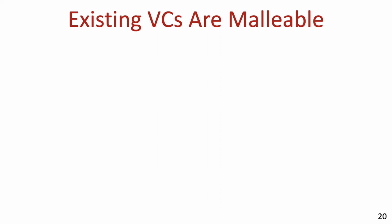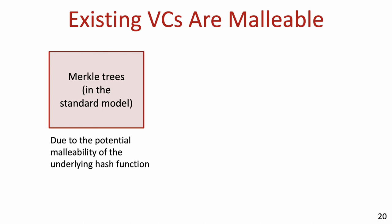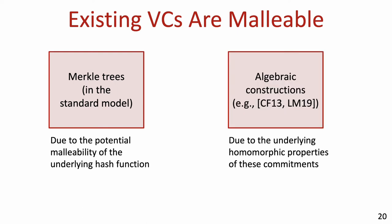Note that existing VCs do not satisfy our notion of non-malleability. Merkle trees in the standard model may be malleable — this is due to the fact that the underlying hash function used to construct the tree can itself be malleable. More recent algebraic constructions are also malleable due to their homomorphic properties, which is often by design to allow for public updates to the committed vector. See the paper for a more in-depth discussion.